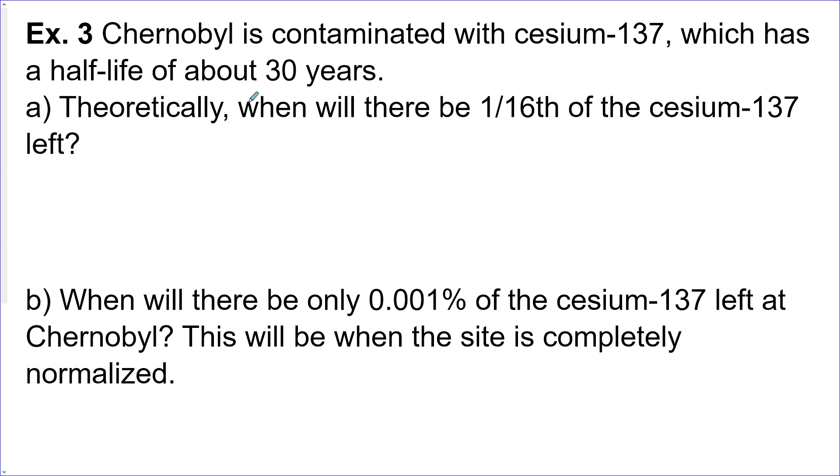The nuclear power plant in Chernobyl had a meltdown. And now Chernobyl and all the surrounding area is contaminated with cesium-137, which was supposed to have a half-life of about 30 years. Theoretically, when will there be 1 16th of the cesium-137 left? Let's set up a half-life equation. Our amount at time t is equal to our initial amount. 1 half is our base because we're doing a half-life equation. t is up here and we divide that by the half-life. Now, the amount we want to find is 1 16th.